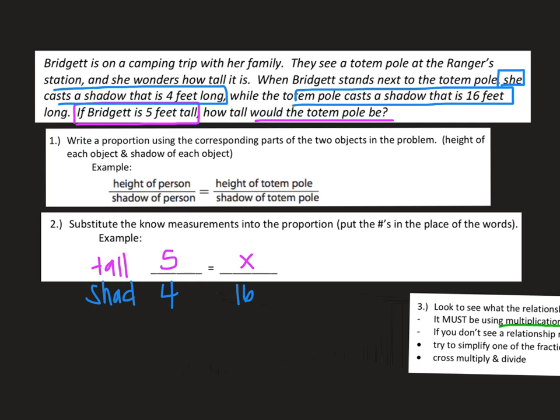For this example, we can tell what's happening. The shadow of the person compared to the shadow of the totem pole, this has a perfect relationship. This is being multiplied by 4. The totem pole's shadow is 4 times longer than hers. So that means that the height of the totem pole should also be 4 times taller than what she is. Therefore, the totem pole should be 20 feet tall.